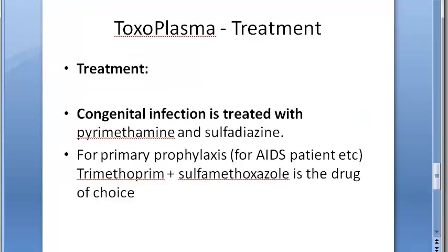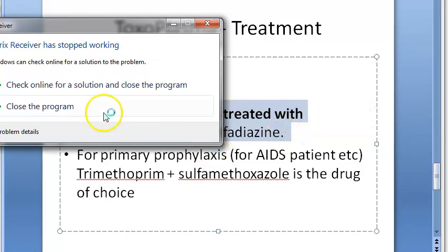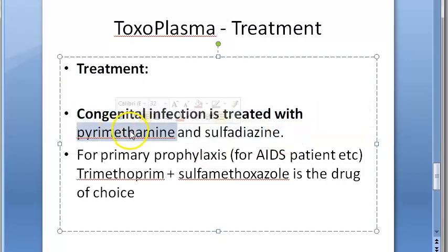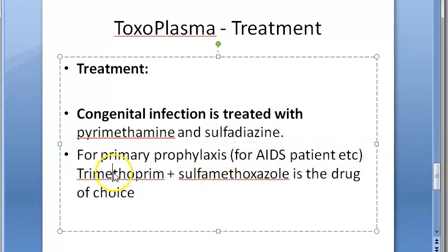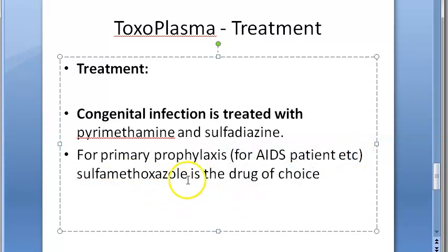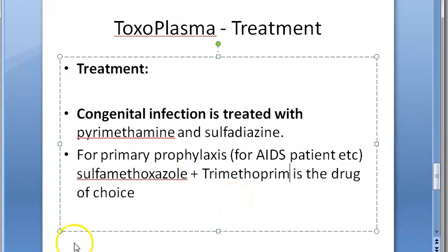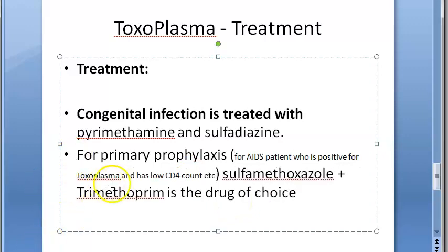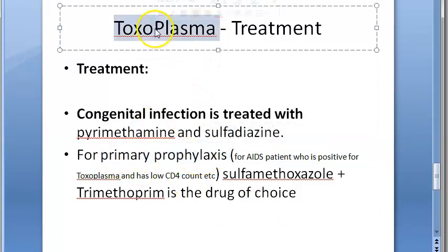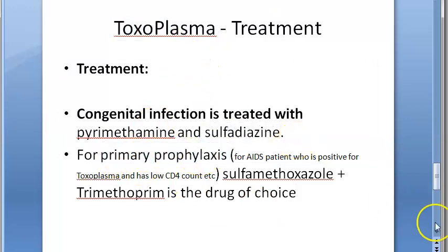What is the treatment for Toxoplasma? Congenital infections are treated with pyrimethamine and sulfadiazine. For primary prophylaxis — for example, for AIDS patients whose lymphocyte count is really low — you give trimethoprim and sulfamethoxazole, which is nothing but cotrimoxazole. Cotrimoxazole is used as primary prophylaxis for toxoplasma infection.